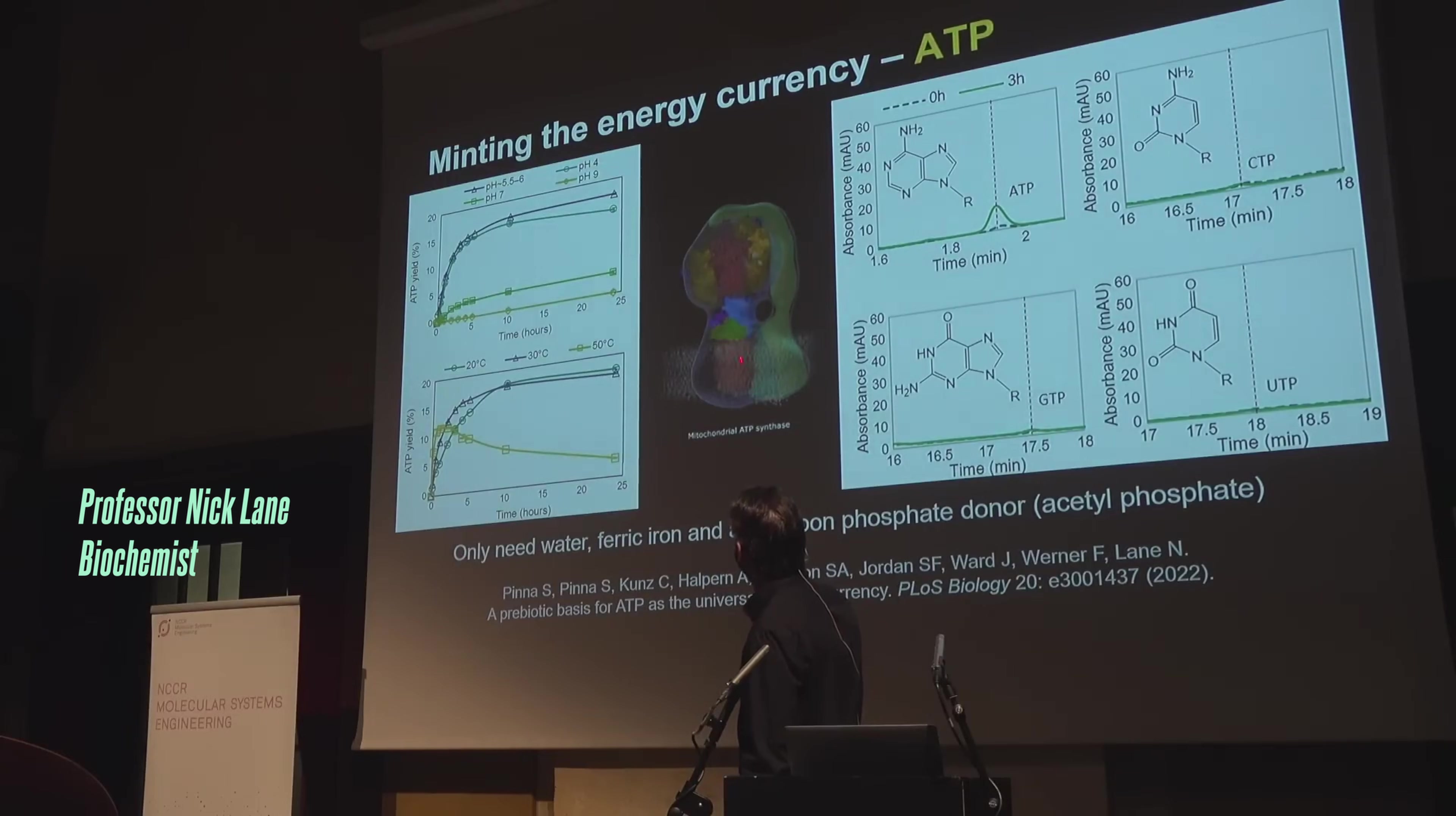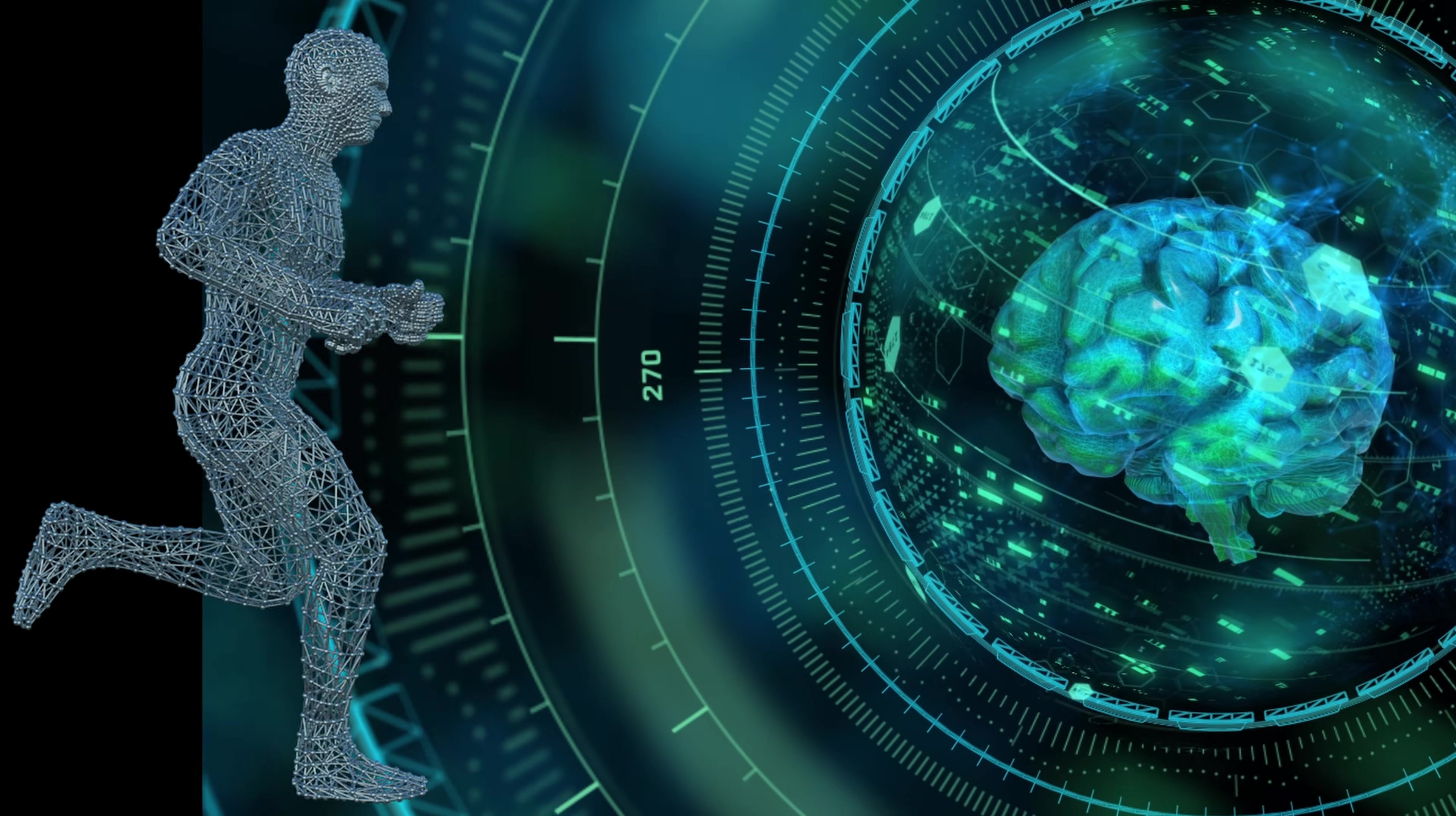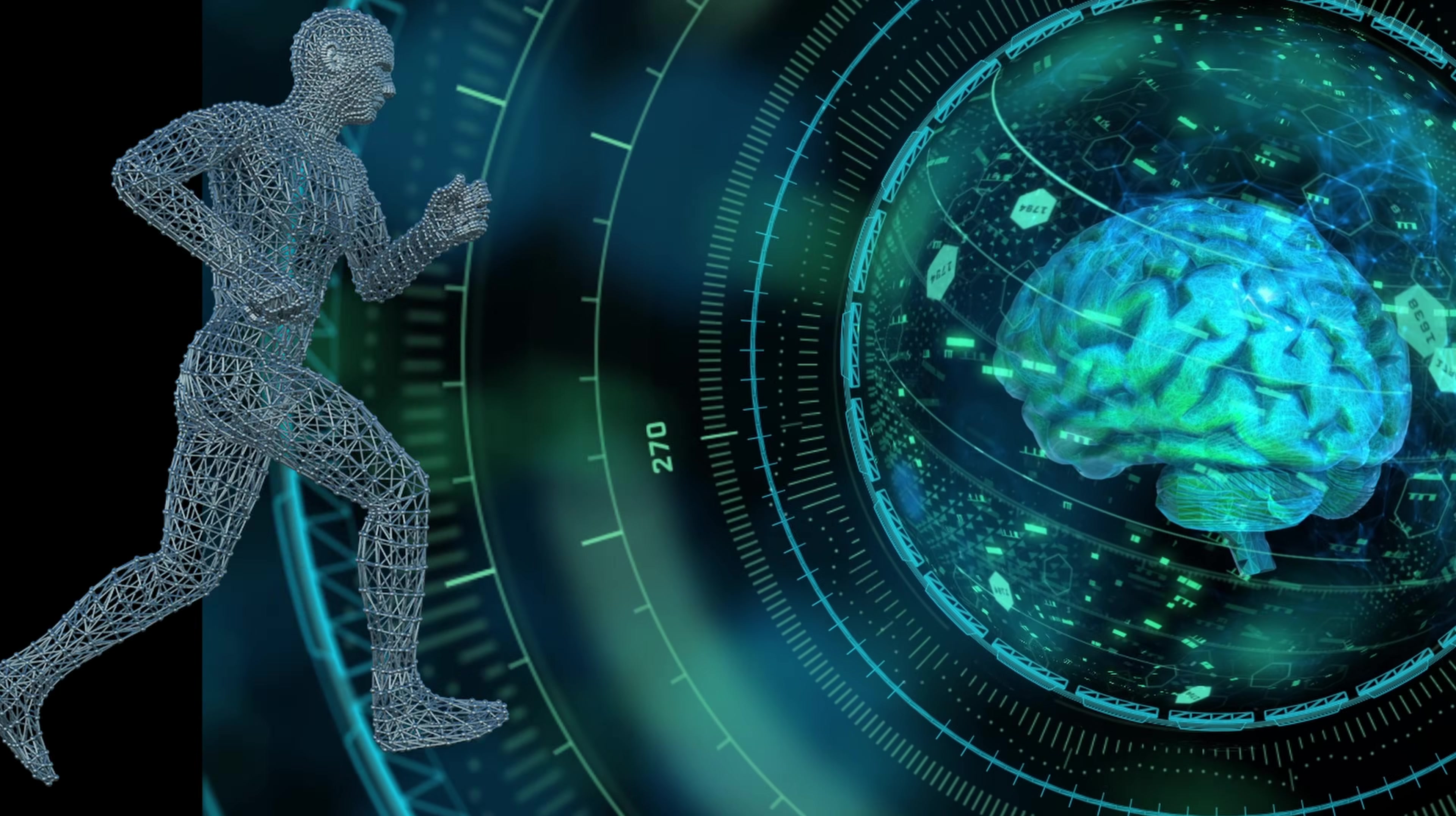Professor Lane describes the situation with the word magic. But if there were no energy production at this speed, we would not be able to make any of our movements. We cannot think. We cannot run.